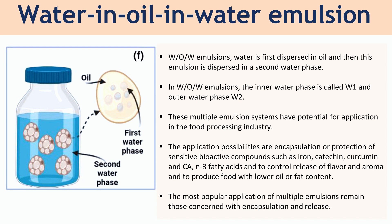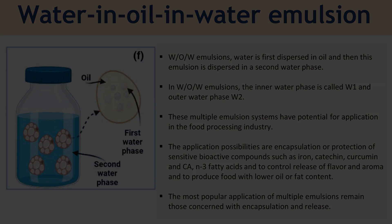The inner water phase is called W1 and the outer water phase is W2. These multiple emulsion systems have potential for application in the food processing industry. The application possibilities are encapsulation or protection of sensitive bioactive compounds. The most popular application of multiple emulsions remains those concerned with encapsulation and release.